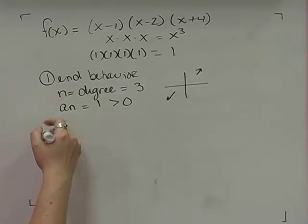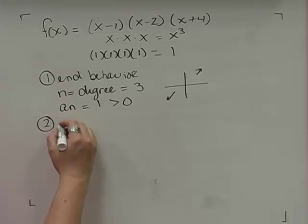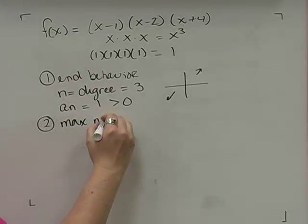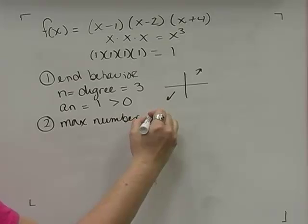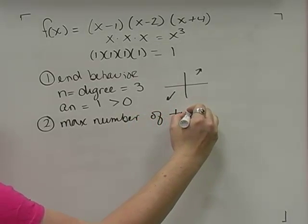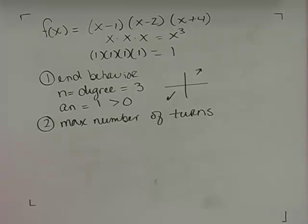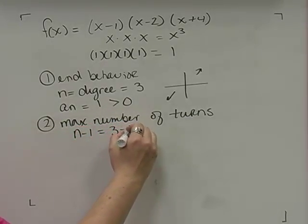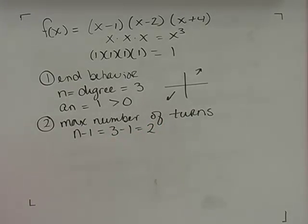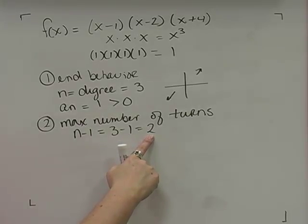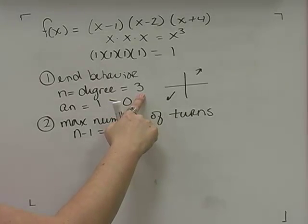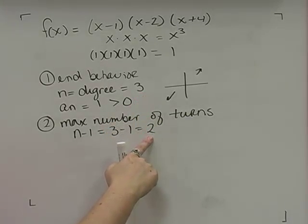The next step is finding the maximum number of turns. To find the max number of turns, take the degree and subtract 1: n − 1 = 3 − 1 = 2. So I have at most 2 turns — not guaranteed 2, but no more than 2. If the graph has more than 2 turns, there's a mistake in the degree or leading coefficient.